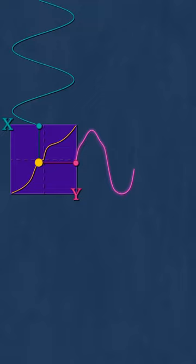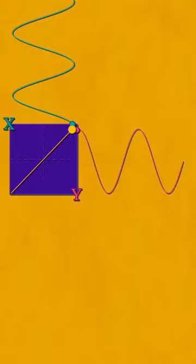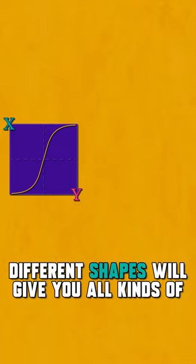Distortion. A straight line won't change the sound at all because x is y. When we start adding curvature to the shape it will introduce the harmonics that make up the distortion. Different shapes will give you all kinds of wild results.